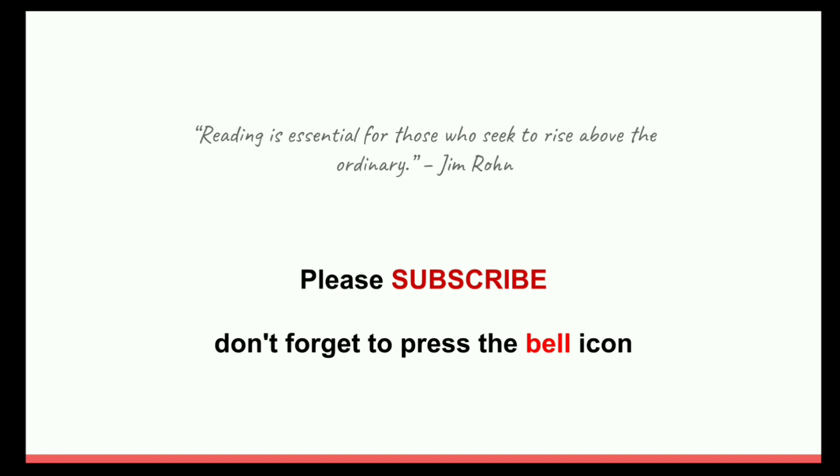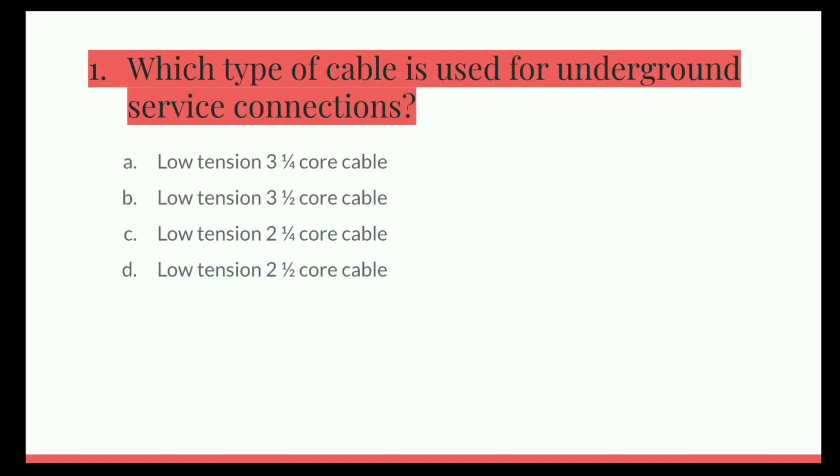Let's start from the first question. Which type of cable is used for underground service connections? Option A, Low Tension 3 1/4 core cable. B, Low Tension 3 1/2 core cable. C, Low Tension 2 1/4 core cable. D, Low Tension 2 1/2 core cable. So the correct answer is Low Tension 3 1/2 core cable.